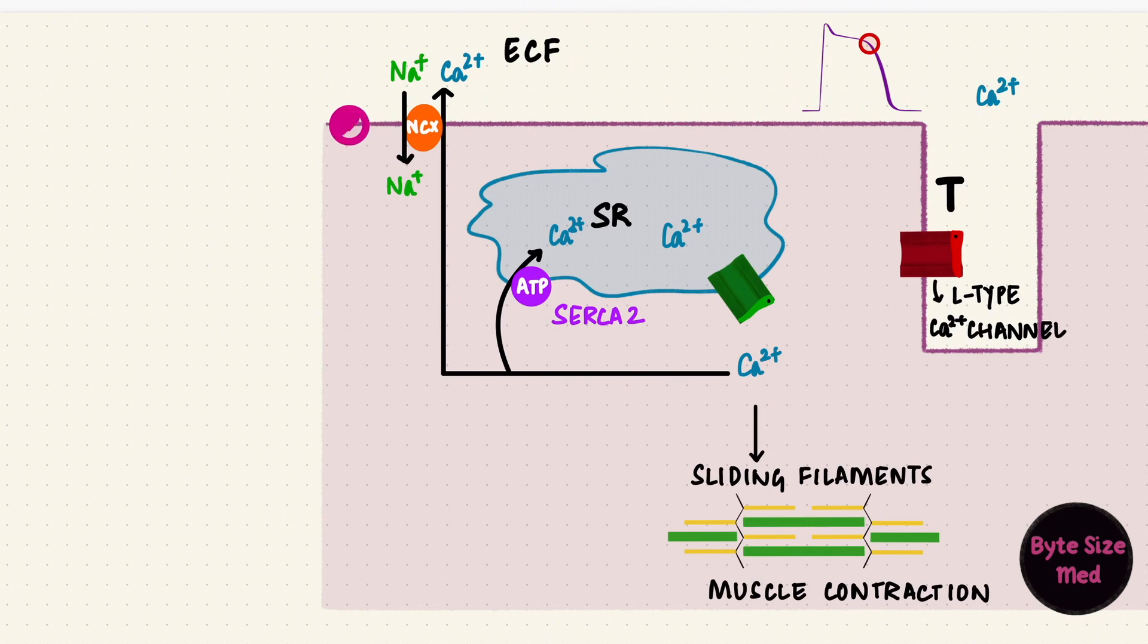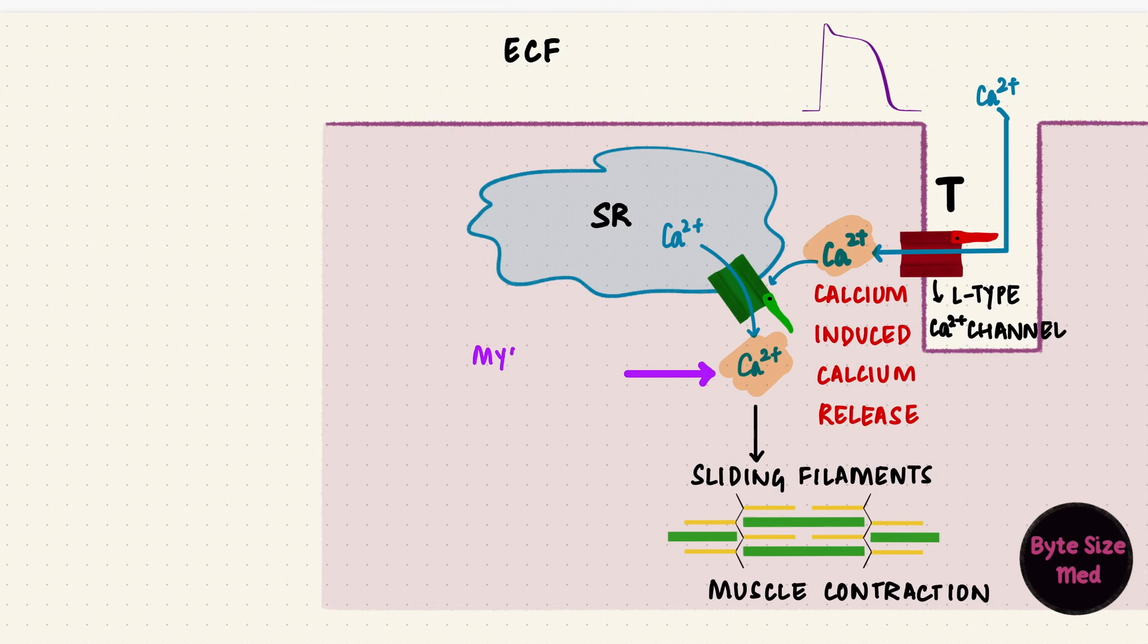That sodium is then pumped out by a sodium-potassium ATPase pump. So the calcium level in the cell comes back down again, and when another action potential arrives, the process repeats. The tension that develops in the myocardial cell depends on the intracellular calcium concentration. This ability of myocardial cells to contract and generate